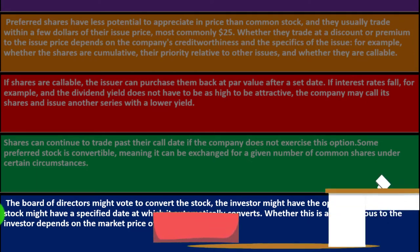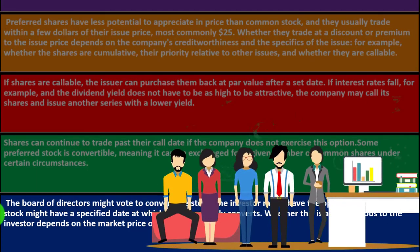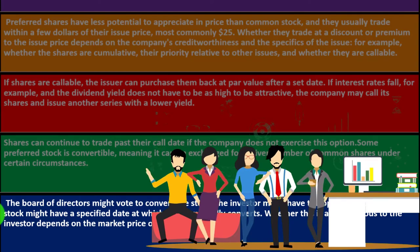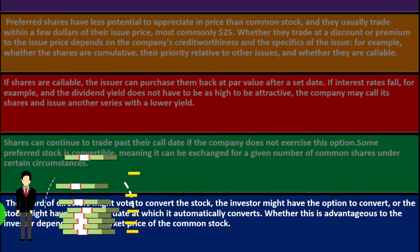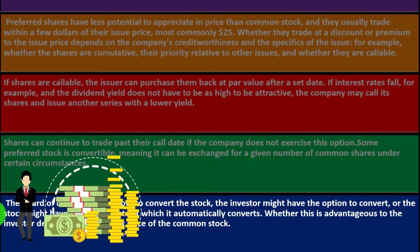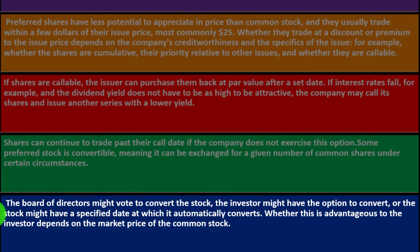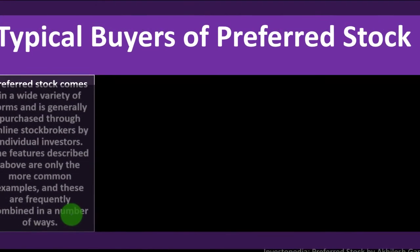Conversion can happen in different ways: the board of directors might vote to convert the stock, the investor might have the option to convert (which would be more beneficial to the investor), or the stock might have a specified date at which it automatically converts. Who benefits from each scenario varies. Whether conversion is advantageous to the investor depends on the market price of the common stock at that time.